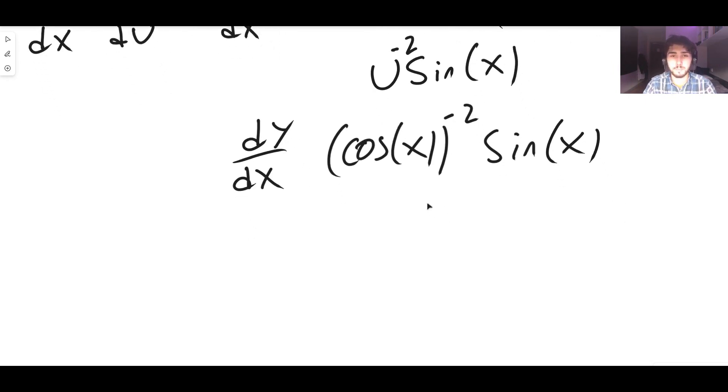We can clean this up a little bit so we get that dy/dx is equal to one divided by cos squared x that's just cos x to the minus two and then multiplied by sin x.